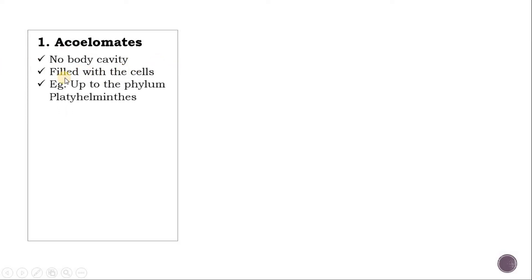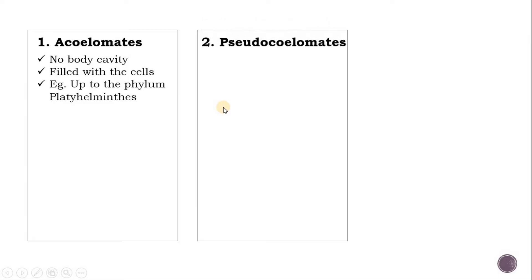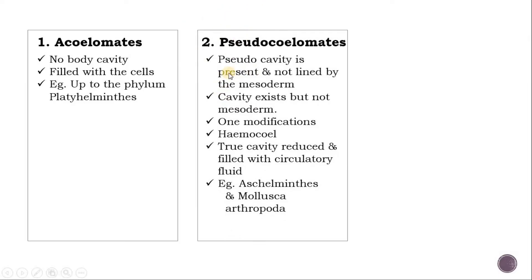Acoelomates have no body cavity — the space is filled with cells. These include phyla up to Platyhelminthes: Porifera, Cnidaria, Ctenophora, and Platyhelminthes. Pseudocoelomates have a pseudo cavity that is not lined by mesodermal epithelium cells — the cavity exists but without a mesodermal lining. Example is Aschelminthes. There is also a modification called haemocoel, where the true cavity is reduced and the cavity between ectoderm and endoderm is filled with circulatory fluids, as in Mollusca and Arthropoda.